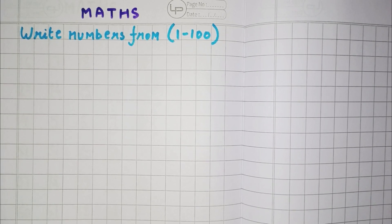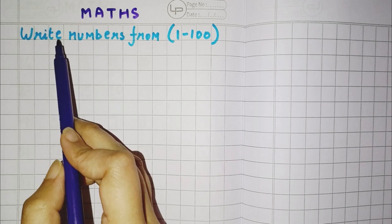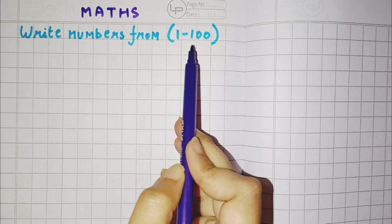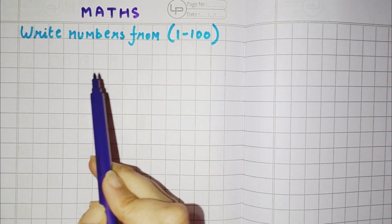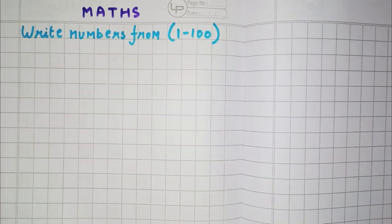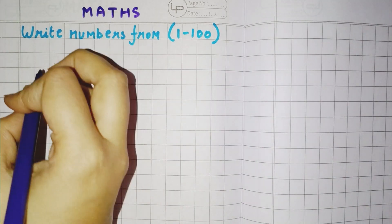Good evening children. Welcome to Maths class. In today's class we will learn how to write numbers from 1 to 100. So, are you all ready? Very good. So, let's start. Count along with me and write.